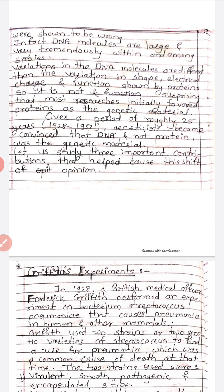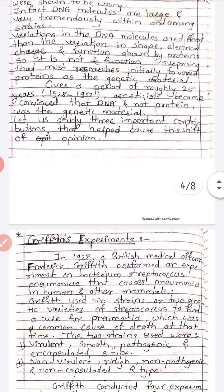The variation in DNA molecules is different from the variation in shape, electrical charges, and function shown by proteins. So it is not surprising that most researchers initially favored proteins as the genetic material. Over a period of roughly 25 years, geneticists became convinced that DNA, and not protein, was the genetic material.